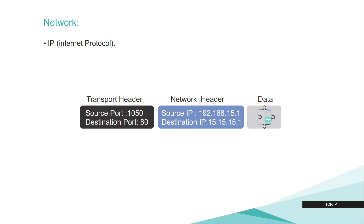The transport layer then forwards the data to the network layer. The network layer includes something called IP, or Internet Protocol. We can think of the network layer as the apartment number. After segmentation and after the transport layer adds the source and destination port, the network layer receives the data and adds a source IP address and a destination IP address. The source IP address and source port number are added in case there is a response — we send a request and should expect a response back.